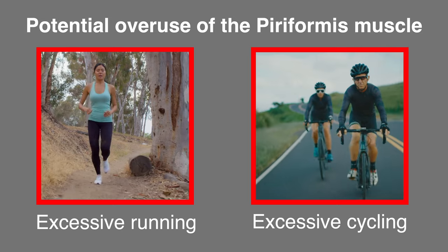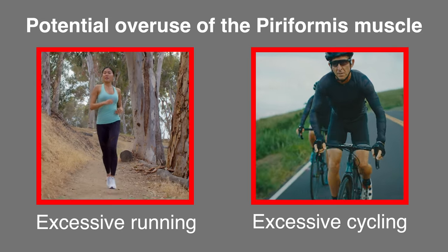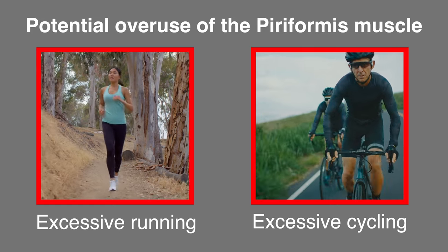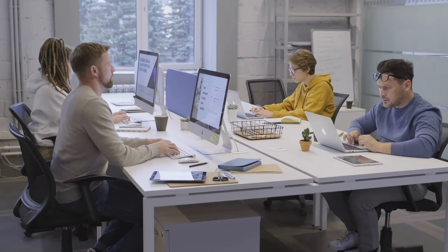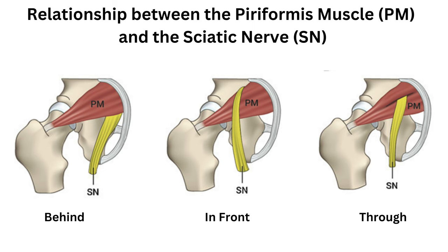If this muscle is overused due to repetition from running or cycling, or is overloaded due to poor biomechanics, or in many cases due to weakness from a sedentary lifestyle, then it can cause the muscle to spasm. This spasm or increased tension of the muscle can then irritate the sciatic nerve, which is located next to or through the piriformis muscle, causing the pain symptoms in the buttock.